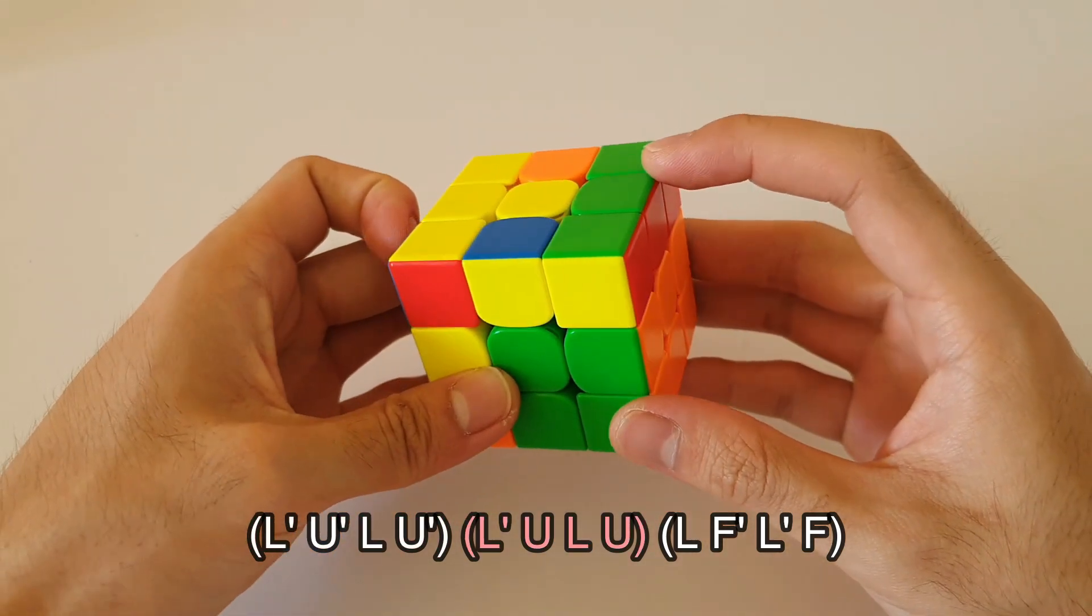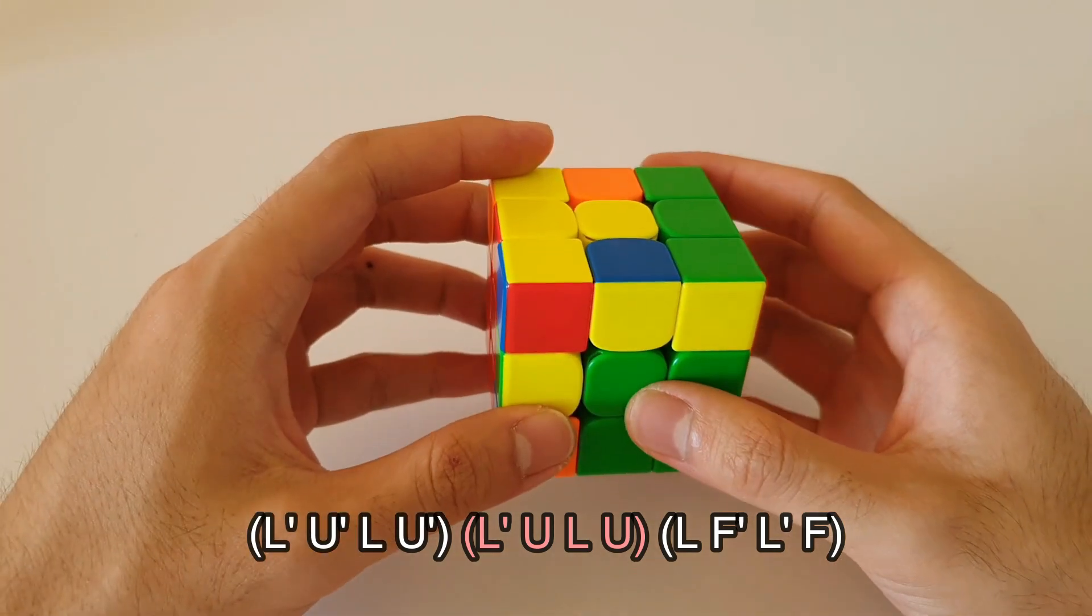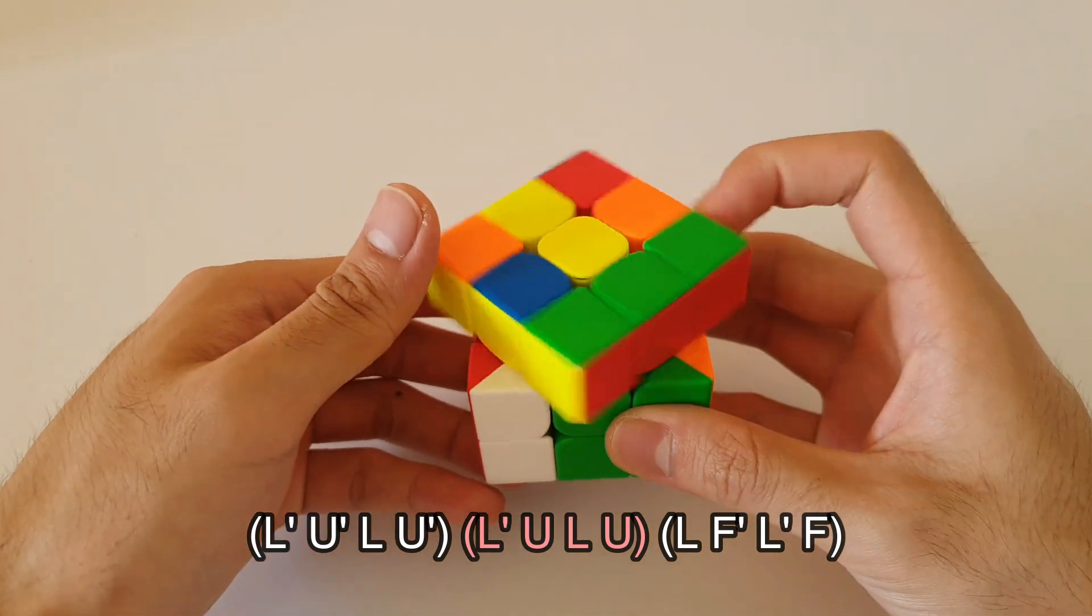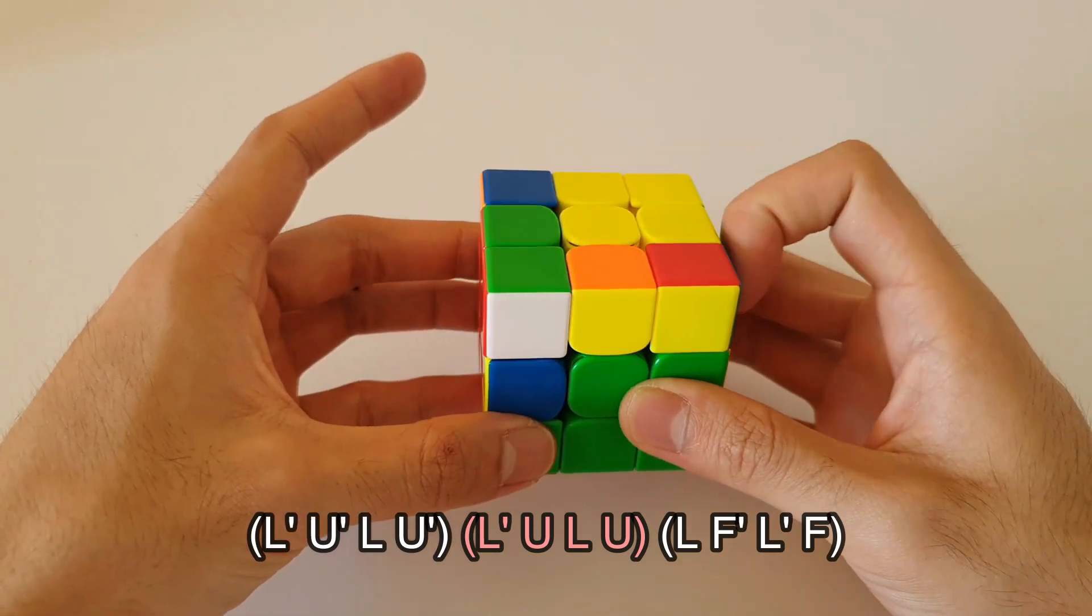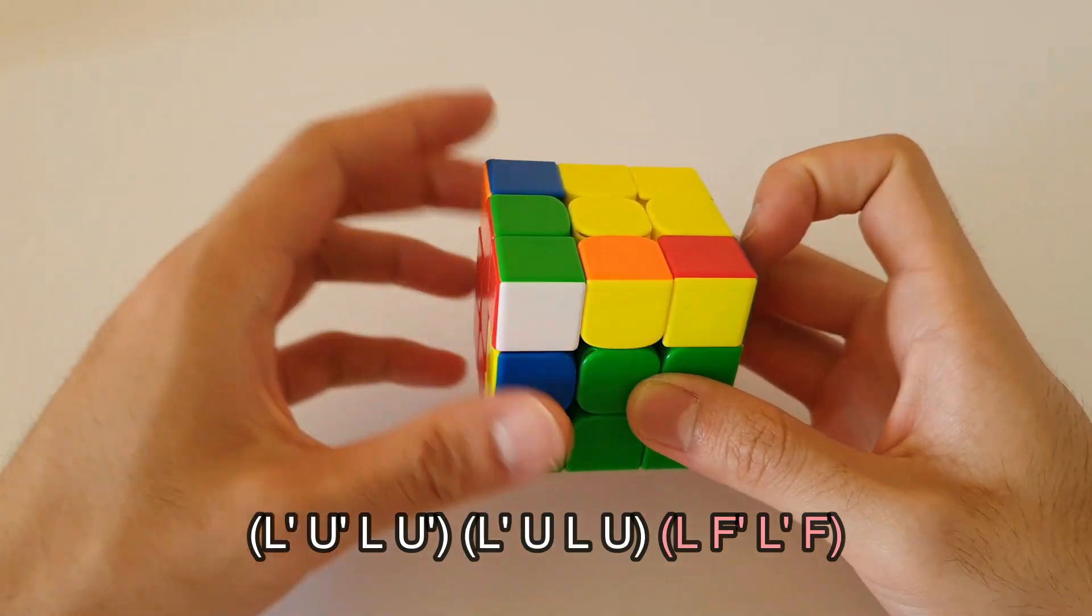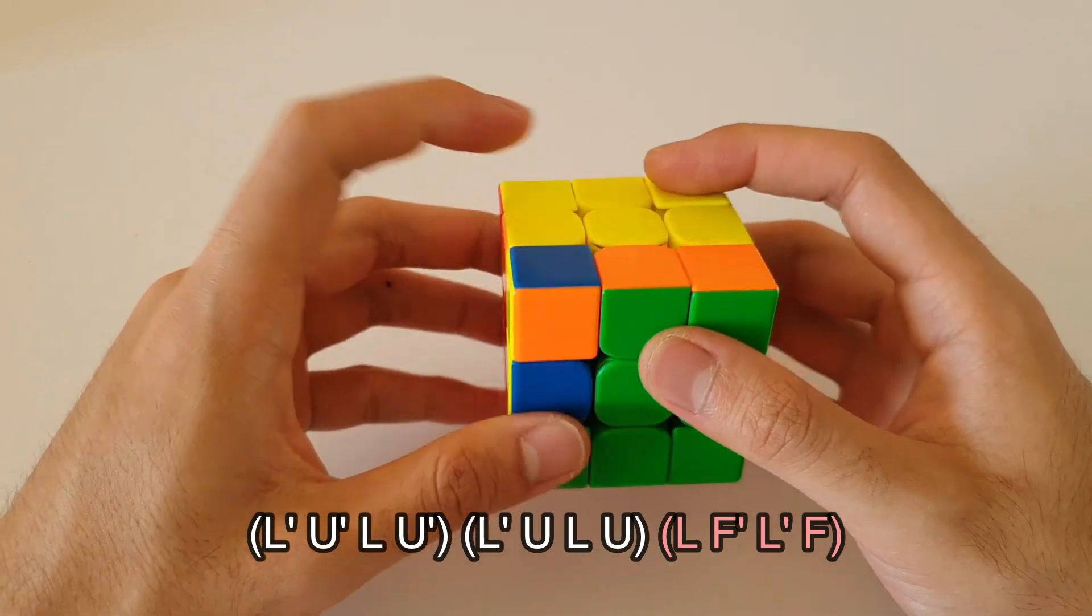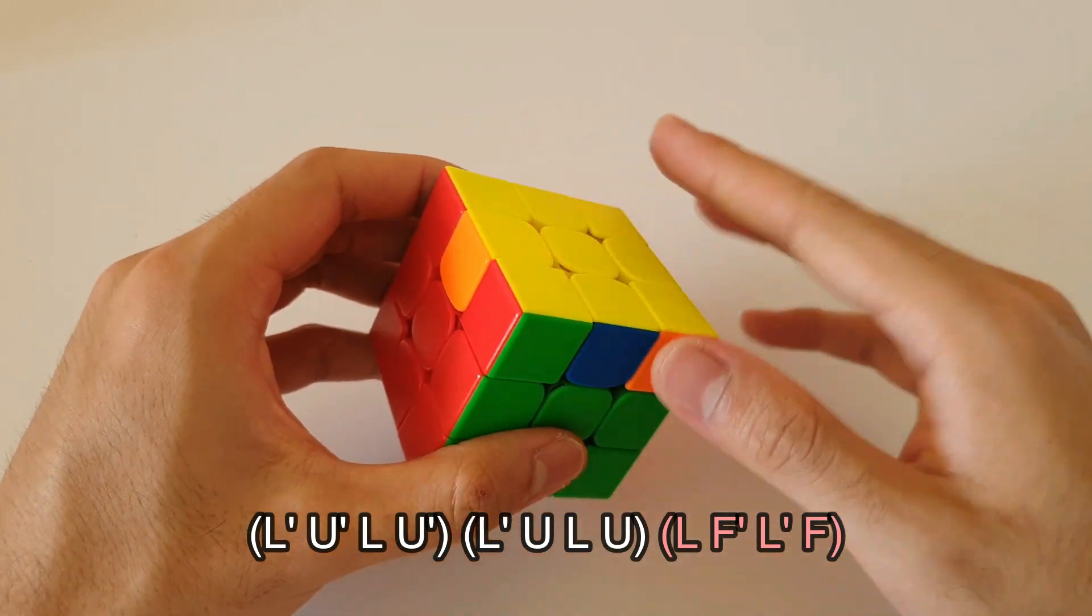Next we want to move the F2L pair all the way back around in a way that sets up a sledgehammer like this. And that once again sets up the sledgehammer. We go into the sledge and that solves that OLL.